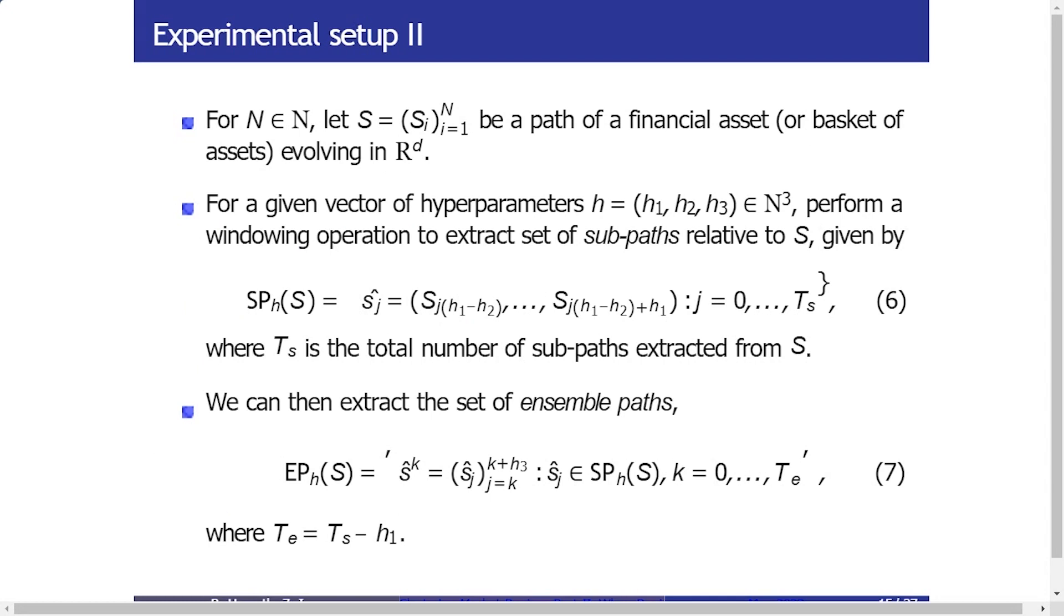I'll give the technicalities as to how we actually construct these paths. In particular, if you have a financial asset here s, which is necessarily living in R^d, what we tend to do is that we take this path and then we cut it up into non-overlapping segments of a given length. And then what we do is we take each of these non-overlapping segments and we group those into what we call an ensemble. So let's say we have a path of length 100 and we want paths of length 10, so we chop that path up into 10 segments of length 10.